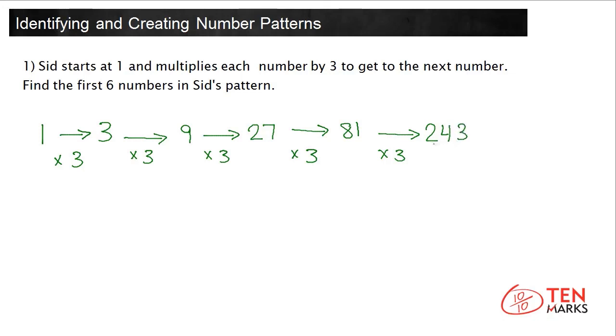The first six numbers in Sid's pattern are 1, 3, 9, 27, 81, and 243.